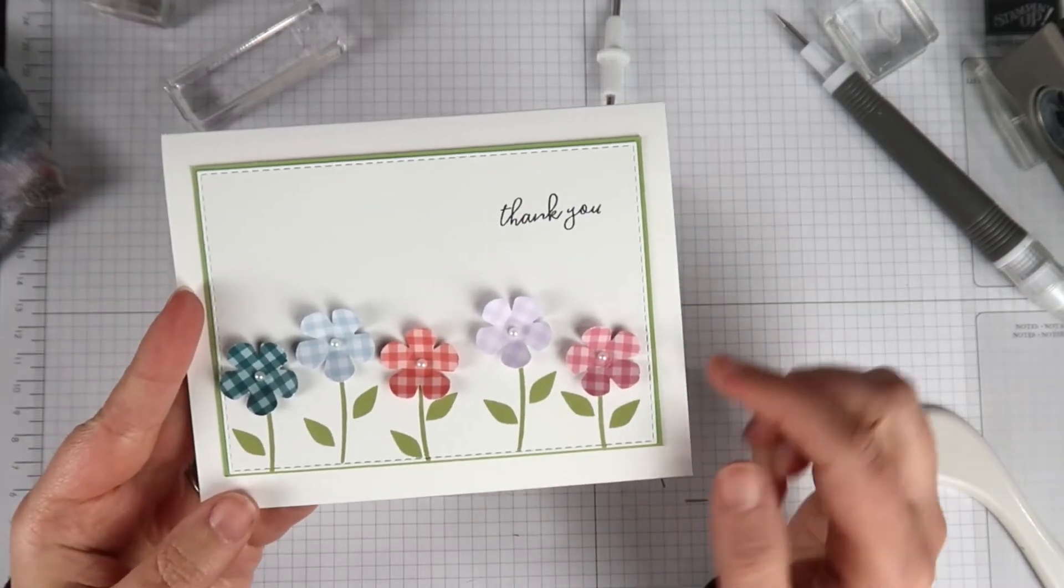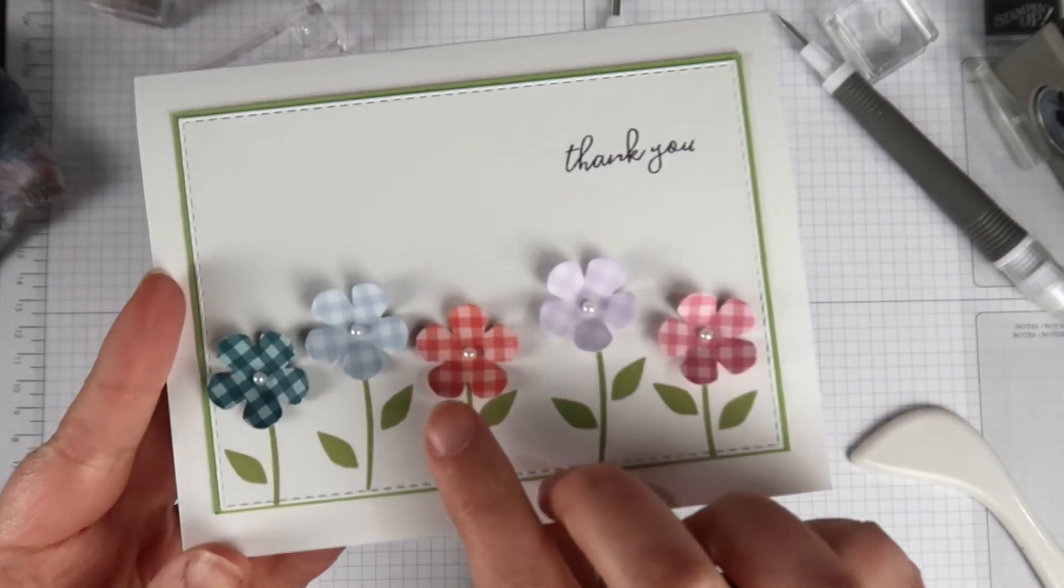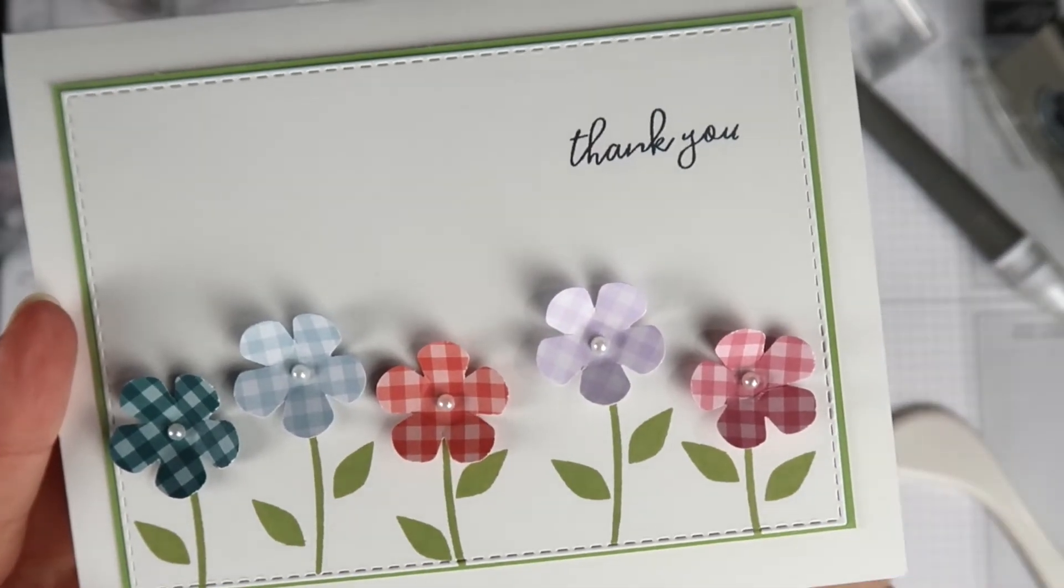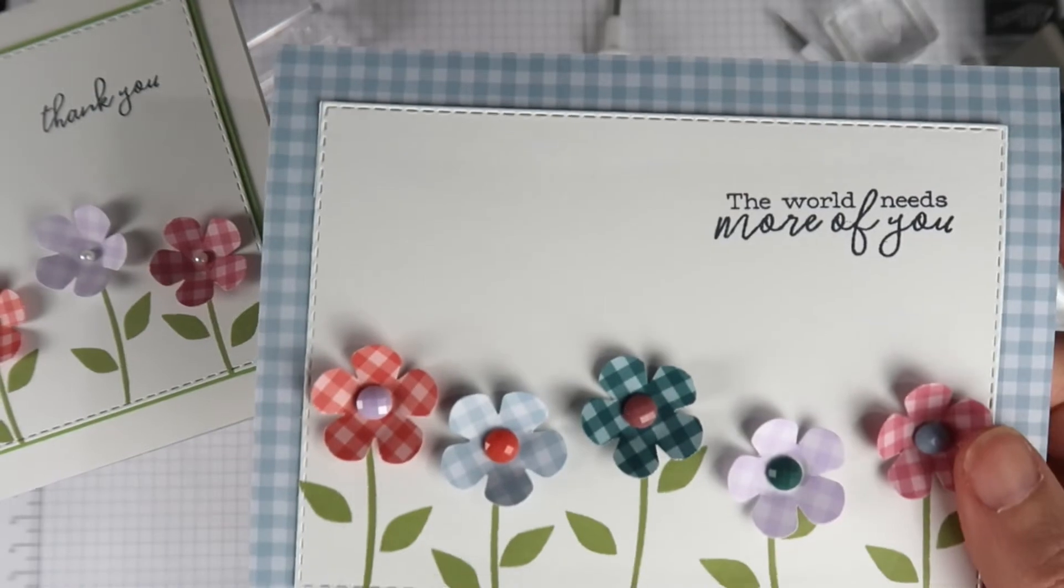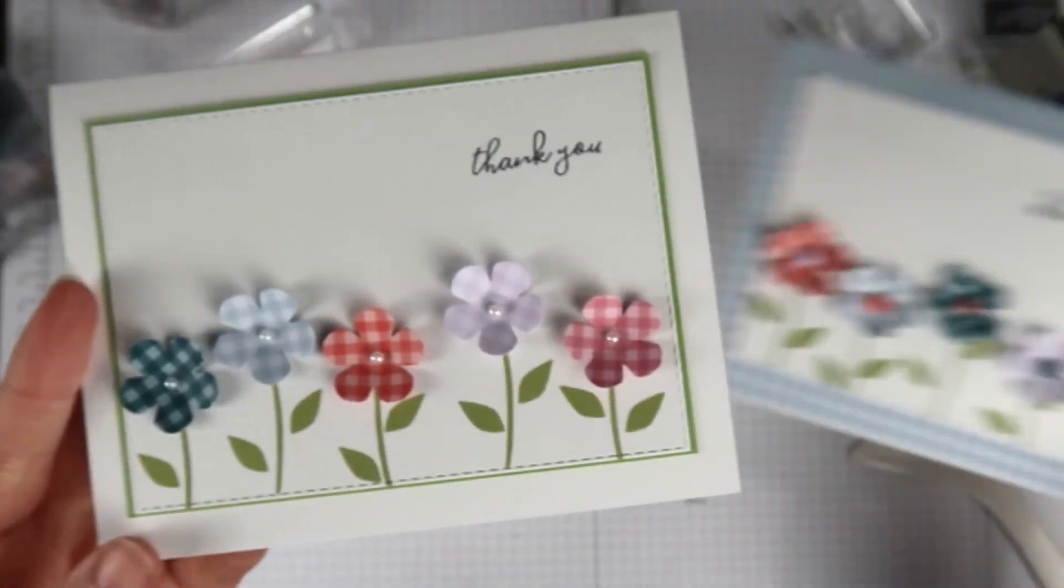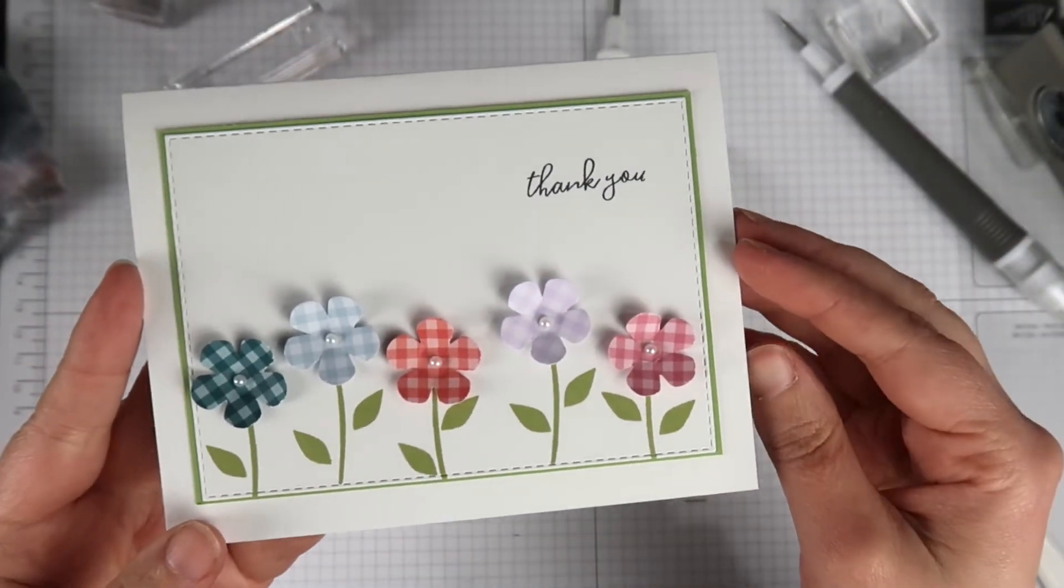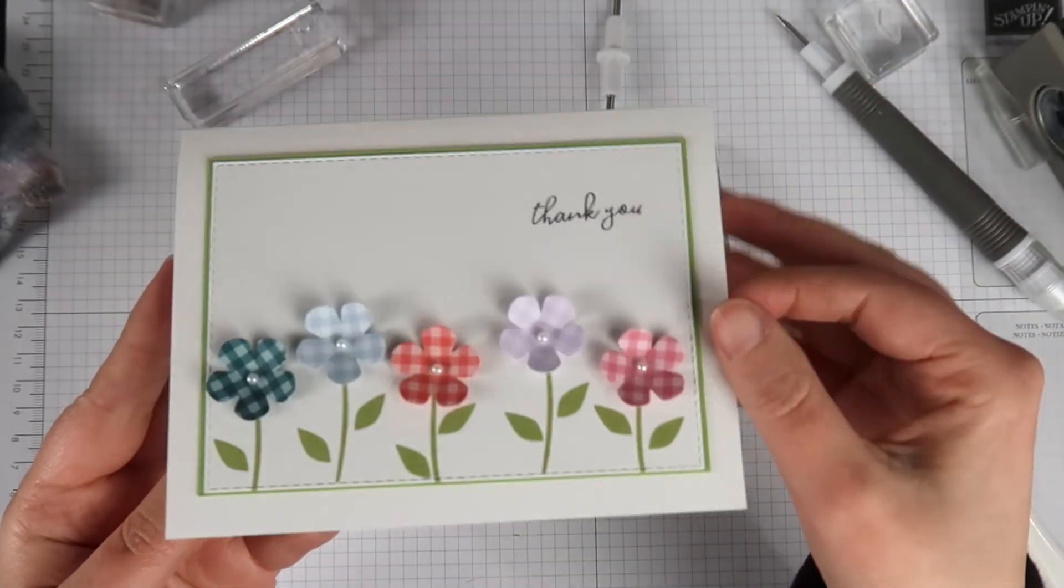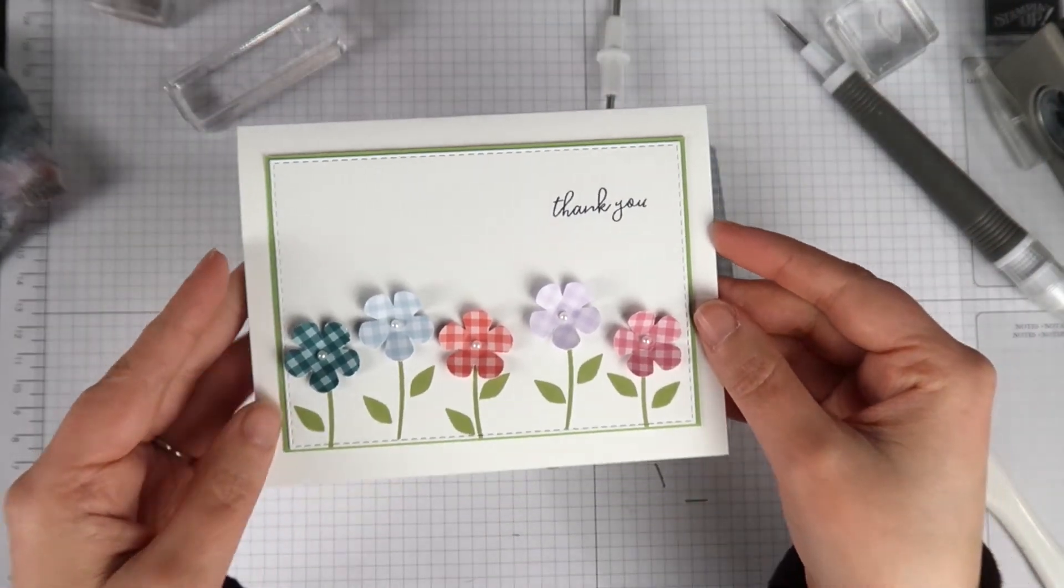I used a white pearl for the center of the flower and instead of using patterned paper for the background, I put a layer of green paper that matched my stems behind the flowers. And I did a very similar inside to this card.